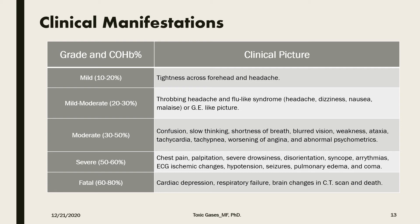With higher levels there will be chest pain, palpitations, more disorientation, more severe drowsiness, and sometimes associated fainting. Cardiovascular manifestation will show arrhythmias and ECG changes resembling ischemic changes. The patient will suffer from hypotension, seizure, and might develop pulmonary edema and coma. The fatal stage is when the carboxyhemoglobin level is more than 60 to 80 percent — there will be cardiac depression, respiratory failure, brain changes appearing on CT scan, and finally death.